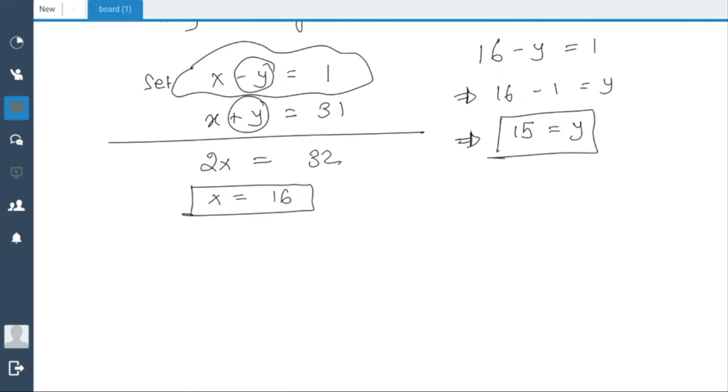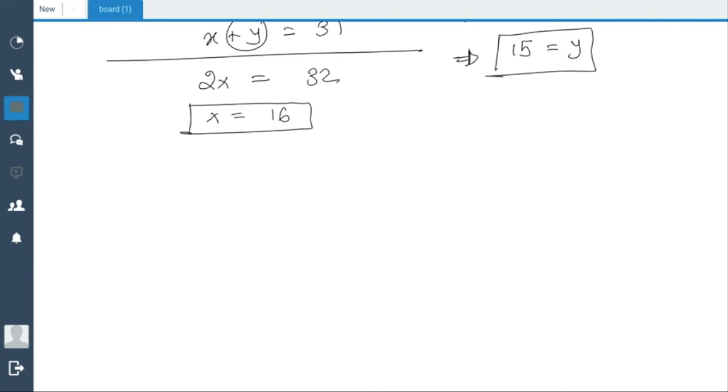The four choices are these: x is 16, y is 15; x is -16, y is -15; since we are squaring it doesn't really matter; -16, positive 15; and 16, -15. So if we take all the whole numbers into consideration, there are these four solutions.